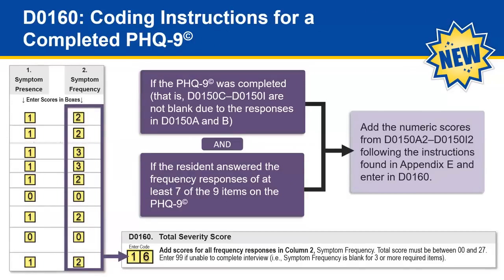This illustration depicts a scenario where all symptom frequencies for the nine items were scored. If the PHQ 9 was completed — D0150C through I were not blank due to the responses in D0150A and B — and if the resident answered the frequency responses of at least seven of the nine items, add the numeric scores from D0150A2 through D0150I2 following the instructions in Appendix E and enter that score in D0160. In this case, that score was 16.